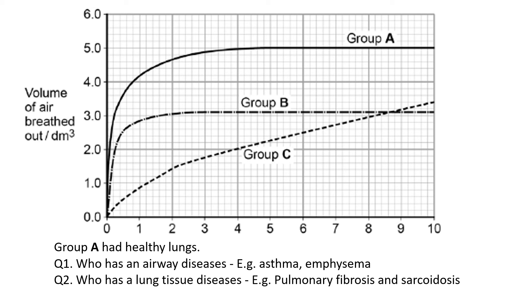Here's another type of graph where you're literally just looking at the volume of air breathed out. The person takes one breath in and is asked to breathe out. Group A has healthy lungs — you need to identify who has an airway disease and who has a lung tissue disease, using your knowledge of the definitions and impacts of those conditions.